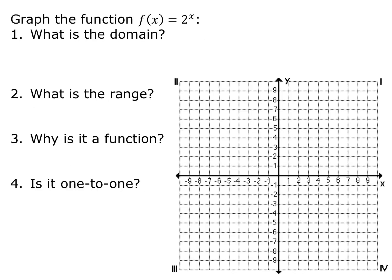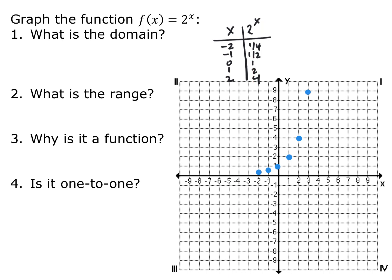Now if we have the exponential function f of x equals 2 to the x and we want to graph it, I'll use a table. Plugging in negative 2, negative 1, 0, 1, and 2: 2 to the negative 2 is 1 over 2 squared, or 1 fourth. 2 to the negative 1 flips to 1 half. Anything to the 0 power is 1. 2 to the 1st is 2. 2 squared is 4. And 2 cubed is 8.